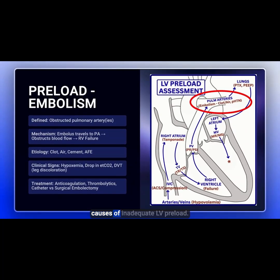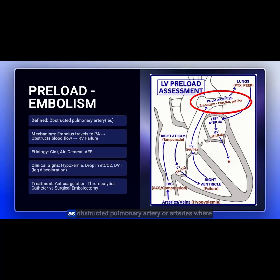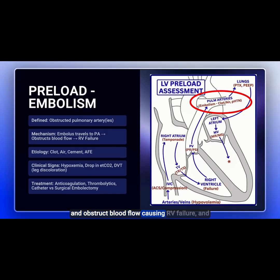Let's keep moving down the causes of inadequate LV preload. Let's look at embolism as the cause. This is defined as obstructed pulmonary artery or arteries, where an embolism would travel to the pulmonary artery and obstruct blood flow, causing RV failure and also causing underfilling of that left ventricle.